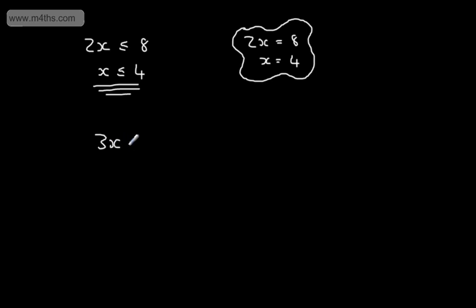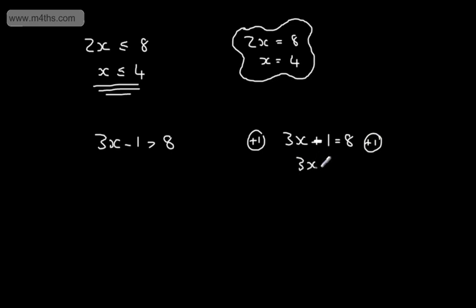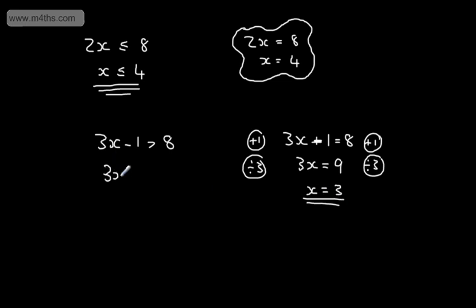Let's look at another inequality: 3x minus 1 is going to be greater than 8. We want to find the values of x that satisfy this. Using the same technique as solving an equation, we add 1 to both sides of the inequality, giving 3x is greater than 9. We then divide both sides by 3, and we end up with x is strictly greater than 3.